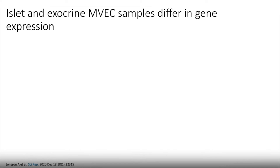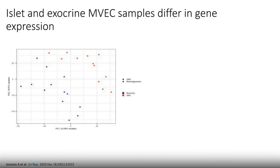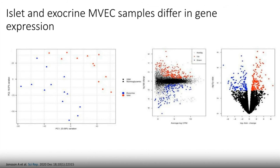So we have reasonably pure samples. How do these samples differ at the gene expression level? We first did a principal component analysis to assess heterogeneity in our samples. The samples cluster somewhat based on the tissue of origin, with islet endothelial cell samples in one part of the PCA and exocrine samples in another. However, there was no clear separation of donors with impaired glucose metabolism from those with normal glycemia. This heterogeneity consisted of about 700 genes upregulated in our islet samples and 600 upregulated in the exocrine samples.